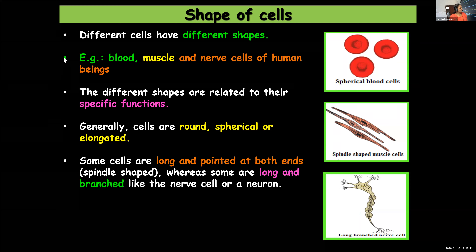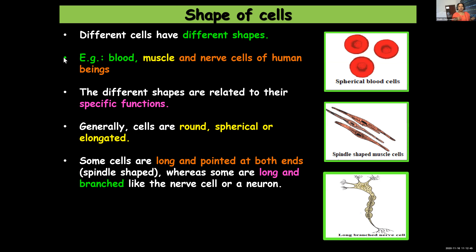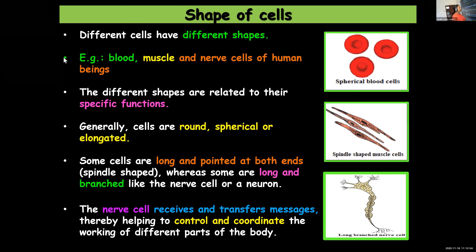Do you know about nerve cells? Where are nerve cells found? They are found in different parts of your body like the brain, spinal cord, and nerves — all these are made up of nerve cells or neurons. Their function is to receive and transfer messages, and this helps in bringing about control and coordination of different parts of the body.